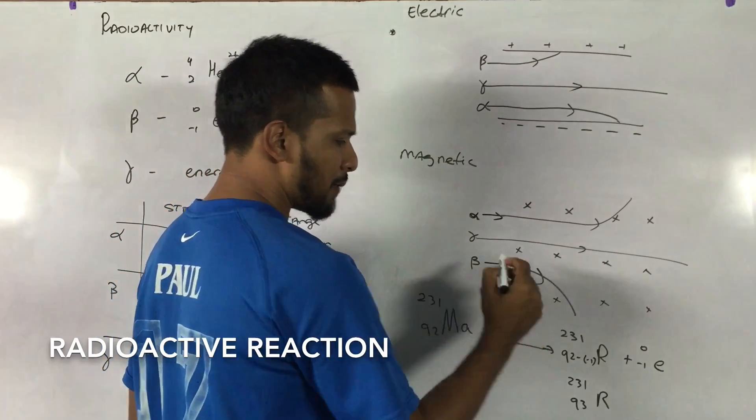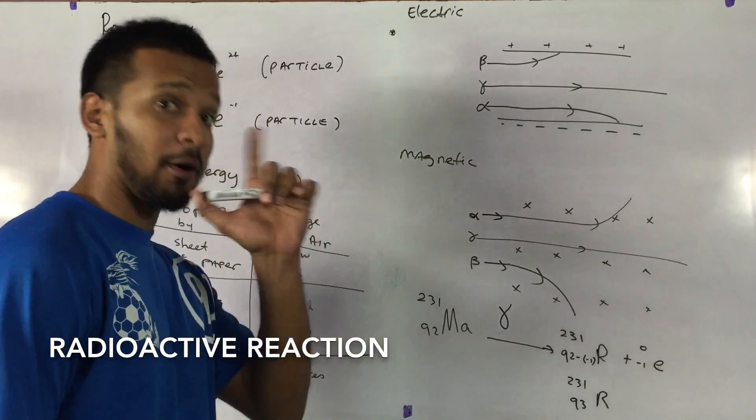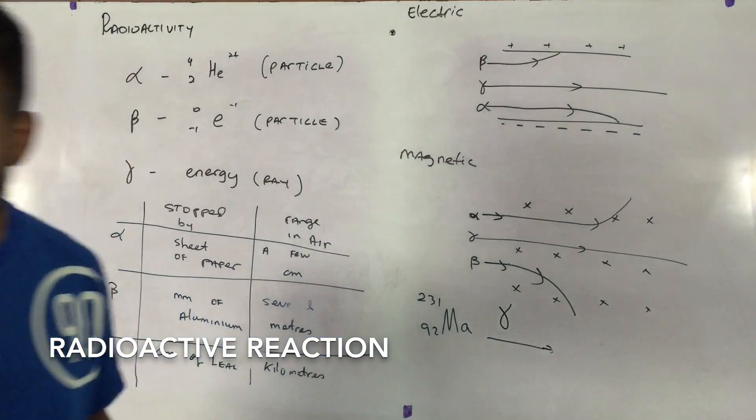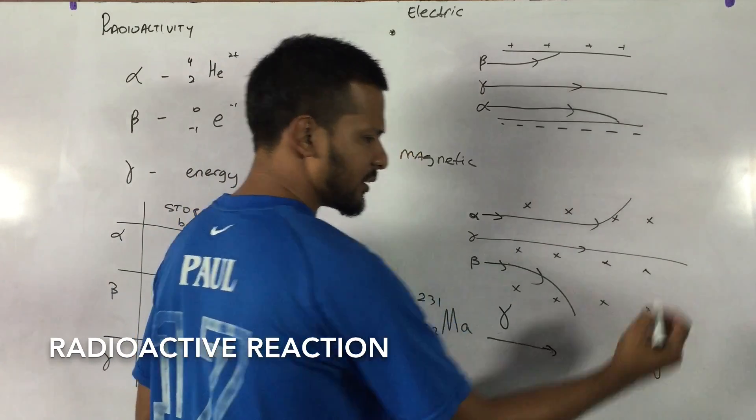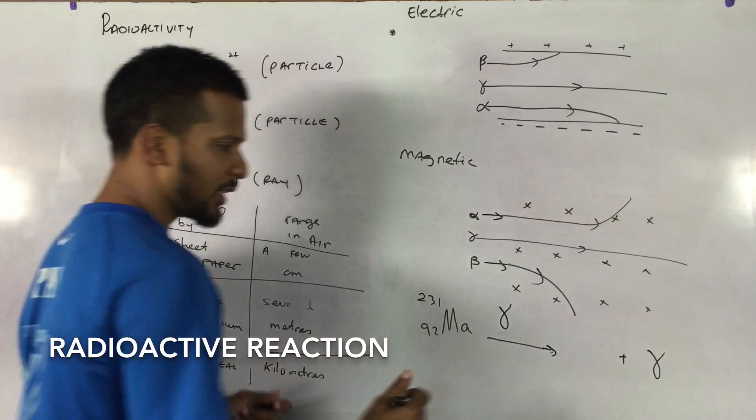And what will happen if you use a gamma particle? Not gamma particle. Gamma ray. Just making sure you're on the same page with me there. Gamma. Well, gamma is just energy. So the atomic number and the nuclear number shouldn't change.